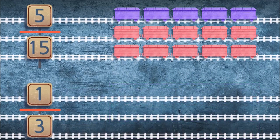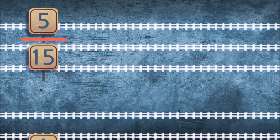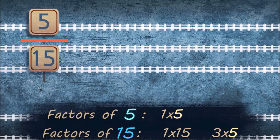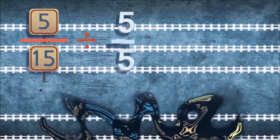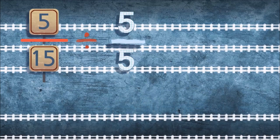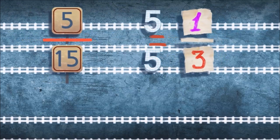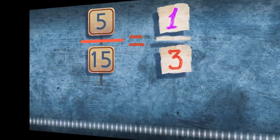It's so boss being a nerd! To convert to the simplest form, we gotta find the greatest common factor, then take a numerator and a denominator and divide them by that common factor.